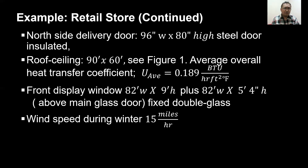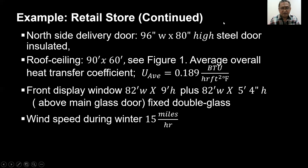The east, west, and north side emergency exit door is 48 inches wide by 80 inches high steel door, insulated. The north side delivery door is 96 inches wide by 80 inches high steel door, insulated. The overall heat transfer coefficient for the roof and ceiling is 0.189 BTU per hour square feet degree Fahrenheit. The front display window is 82 feet wide by 9 feet high, plus an 82 feet wide by 54 inch high above main glass door fixed double glass, and the wind speed during wintertime is 15 miles per hour approximately.